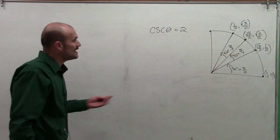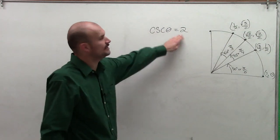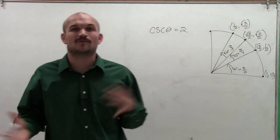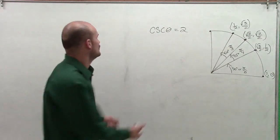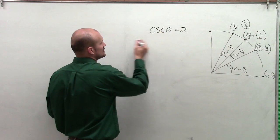So what they're asking us to do is find the angle when cosecant of theta equals 2. So we need to remember exactly what does cosecant represent. Well, remember, cosecant is the reciprocal of sine.